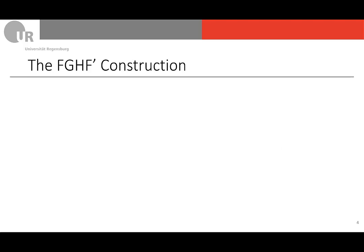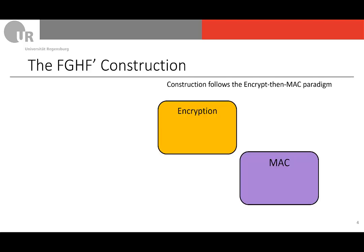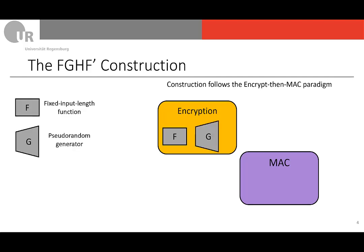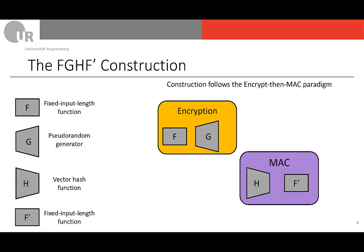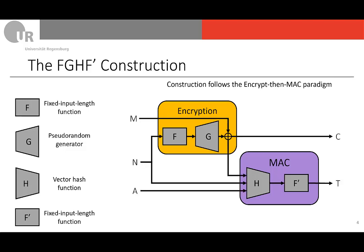We can view SLAY more generally as the abstract FGHF' construction, which follows the encrypt-then-MAC paradigm. We have an encryption scheme and a message authentication code. We can decompose the encryption into a fixed-input-length function F and a pseudorandom generator G, and the message authentication code into a vector hash function H and a fixed-input-length function F'. Together with the inputs and outputs, this is how the whole construction looks like.